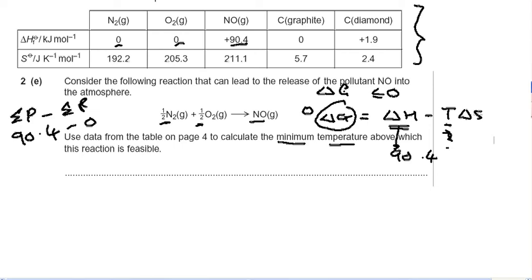Now we're trying to find T, but we need to know what delta S is. And that's right here. To be honest, it's the same thing. The sum of delta S for products minus the sum of delta S for reactants. So the product is NO, 211.1. I've got 211.1, and I'm going to take away the sum of my reactants, which is 192.2, and to add to that, 205.3.